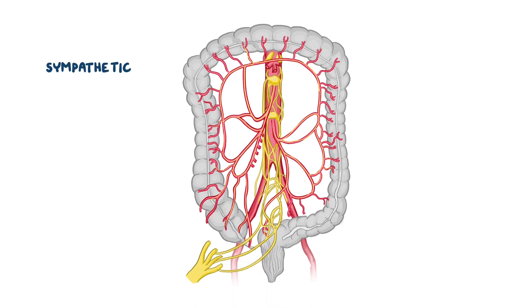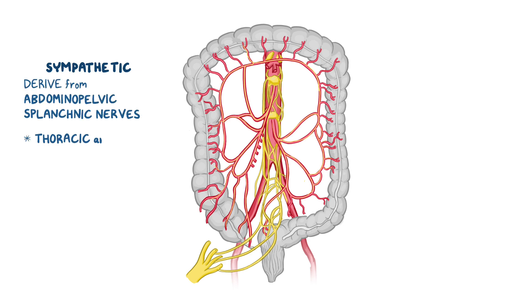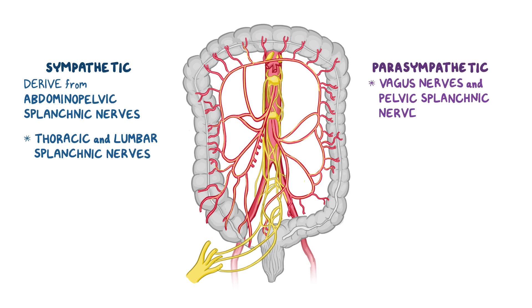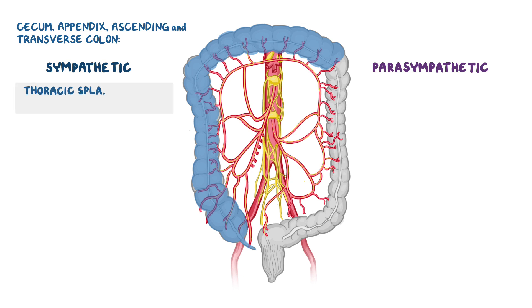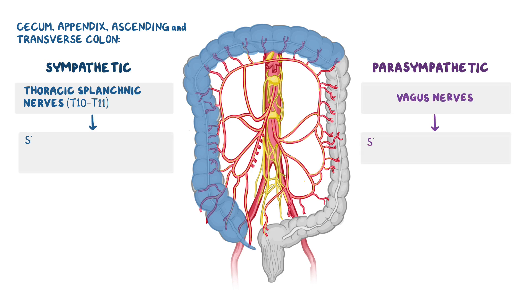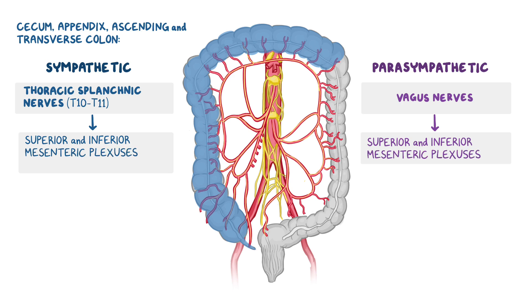Sympathetic fibers to the large intestine derive from the abdominopelvic splanchnic nerves, composed of thoracic and lumbar splanchnic nerves, and parasympathetic fibers are from the vagus nerve and pelvic splanchnic nerves. For the cecum, appendix, ascending, and transverse colon, sympathetic fibers derive mainly from the lesser thoracic splanchnic nerves coming from T10 and T11, while the parasympathetic fibers are derived from the vagus nerves. Together, they go to the superior and inferior mesenteric plexuses, where only the sympathetic fibers synapse in different prevertebral ganglia to their postsynaptic neurons.